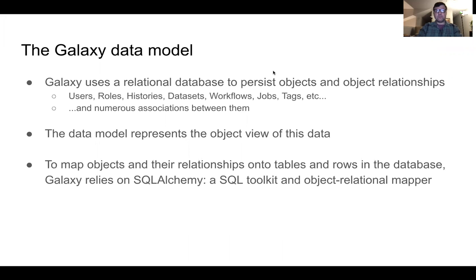Galaxy uses a relational database to persist objects and object relationships that handle its business logic. This includes users, roles, histories, workflows, etc., as well as numerous associations between them. The data model represents the object view of the data and serves as the abstraction layer that provides access to it. To map Python objects and the relationships between them onto tables and rows in the database, Galaxy relies on SQLAlchemy, which is a powerful SQL toolkit and object relational mapper.